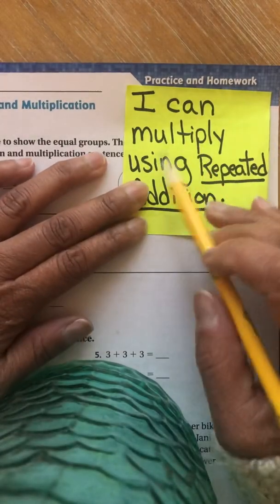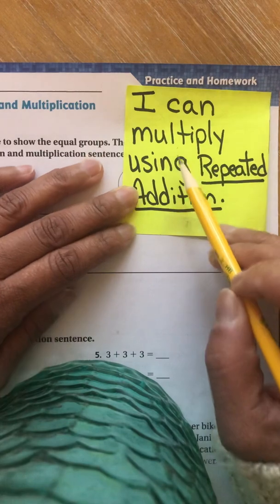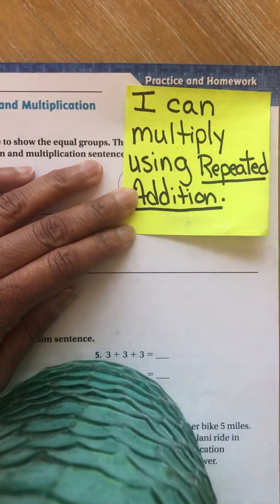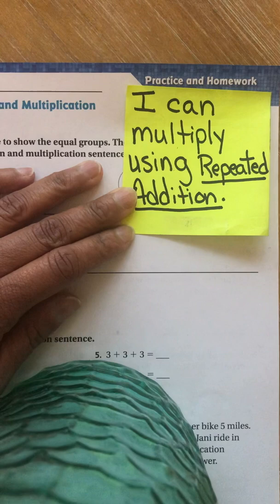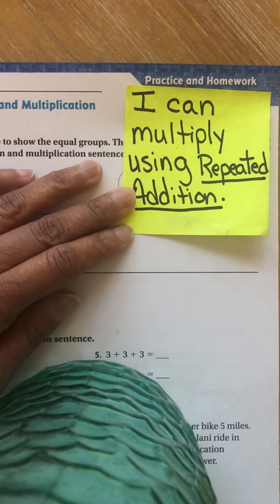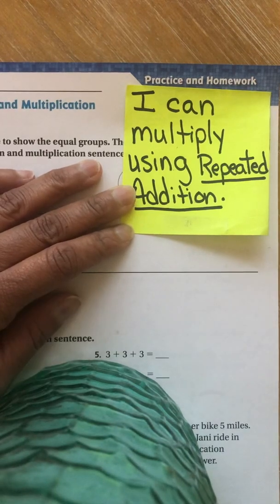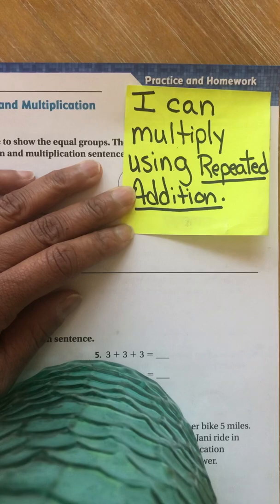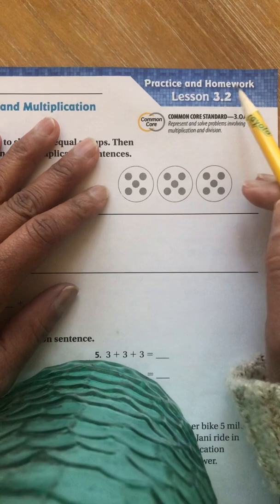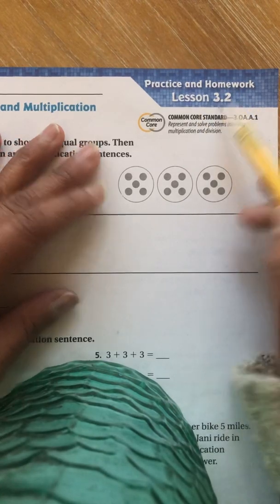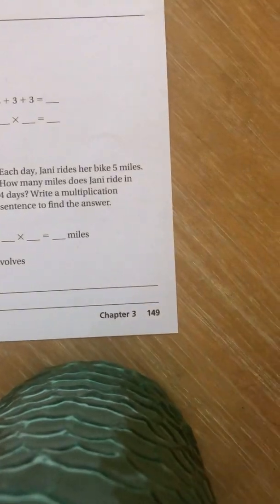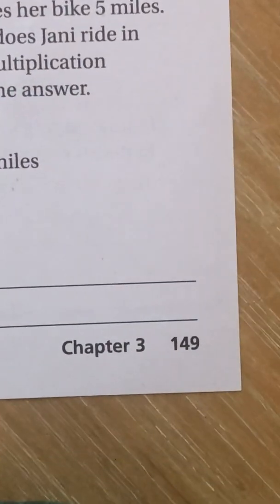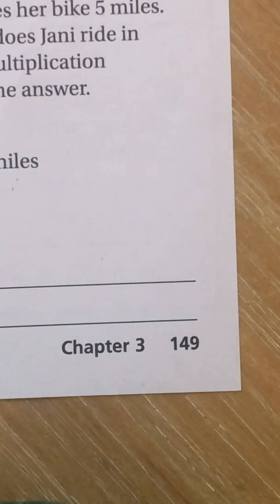Today's learning target was: I can multiply using repeated addition. So we're doing two things — we are relating addition to multiplication. How are they related? They're different, but they're also very much alike. And that's what we were working on today in our GoMath. So here is the homework page. Practice and homework lesson 3.2. We are on page 149, and then we're going to do the back page 150. So we're going to start on page 149.